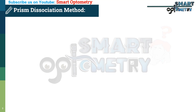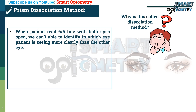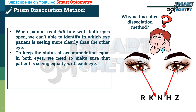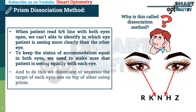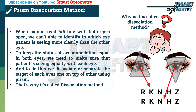Prism dissociation method. Why is this test called a dissociation method? When a patient reads the 6/6 line with both eyes open, we cannot identify in which eye the patient is seeing more clearly. To keep the status of accommodation equal in both eyes, we dissociate or separate the target of each eye — one on top of the other — using a prism. That's why it's called the dissociation method.